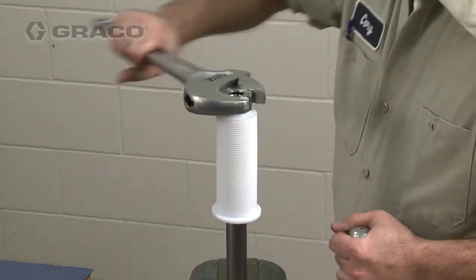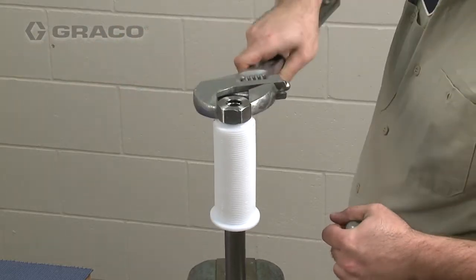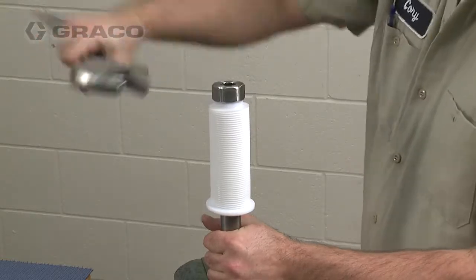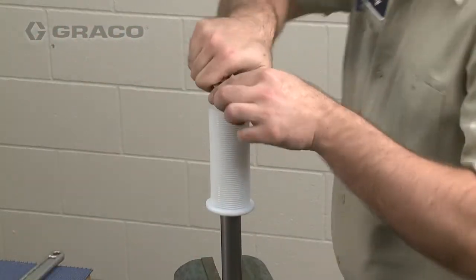Clamp the flats of the bellows sleeve in a smooth jawed vise. Then, using a wrench on the flats of the bellows nut, remove the nut from the bellows seal.